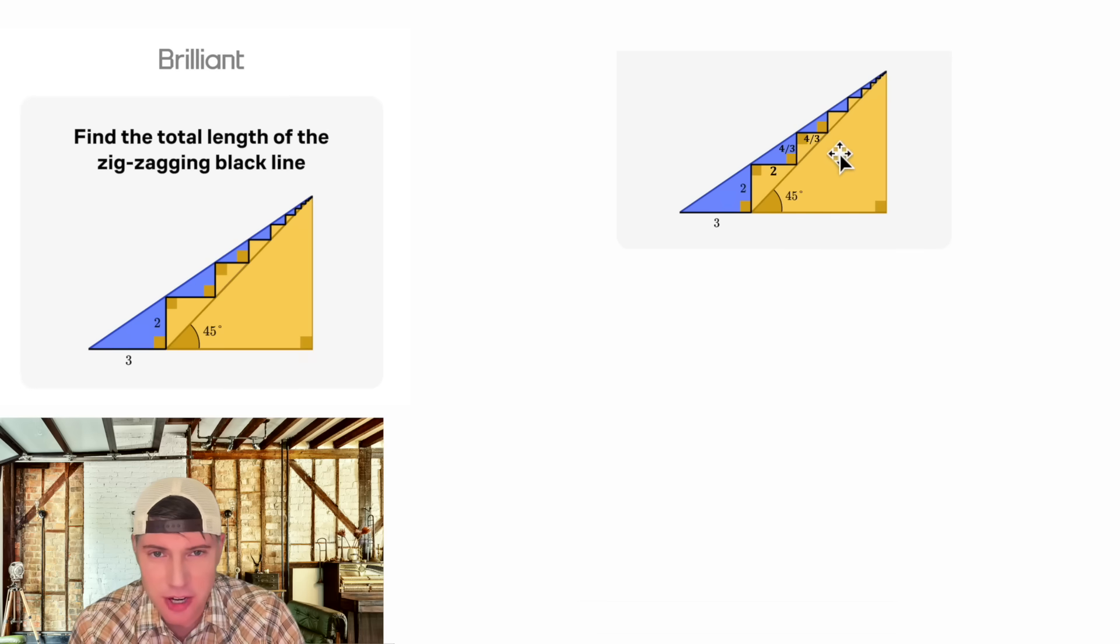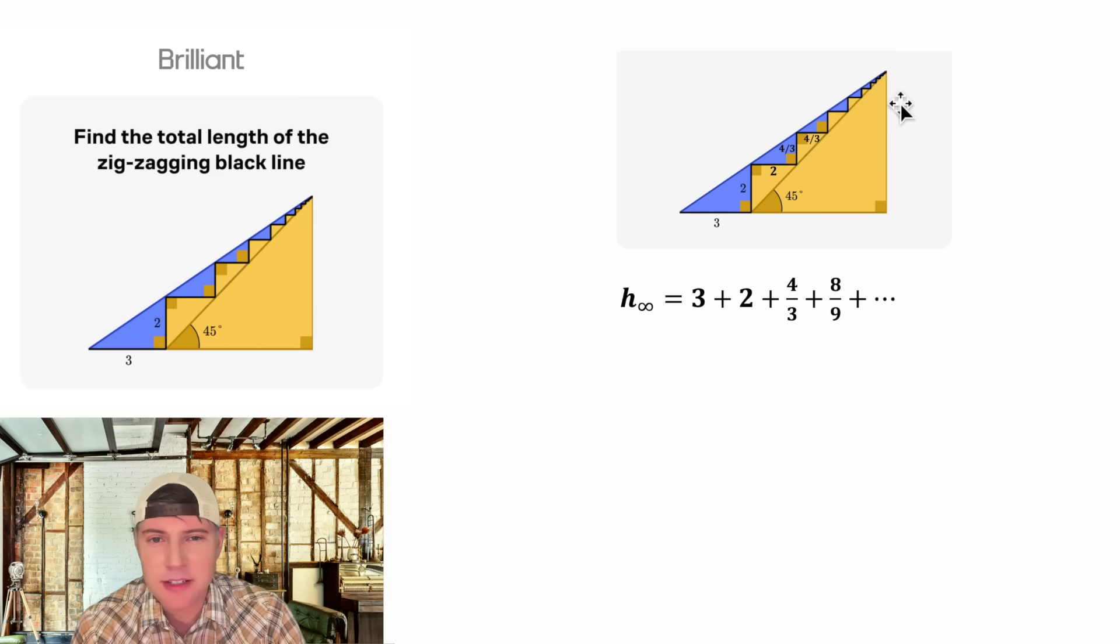So let's call all these horizontal distances going on forever h sub infinity. It's going to be three plus two plus four-thirds. The next one would be eight-ninths and so on. And there's a pattern for this sum.